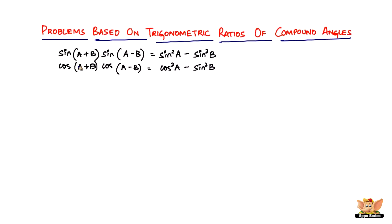Here are those formulas. Sine of (a+b) times sine of (a-b) equals sin²a minus sin²b. And similarly, cos(a+b) times cos(a-b) equals cos²a minus sin²b. These are the two formulas that you have to concentrate on remembering.